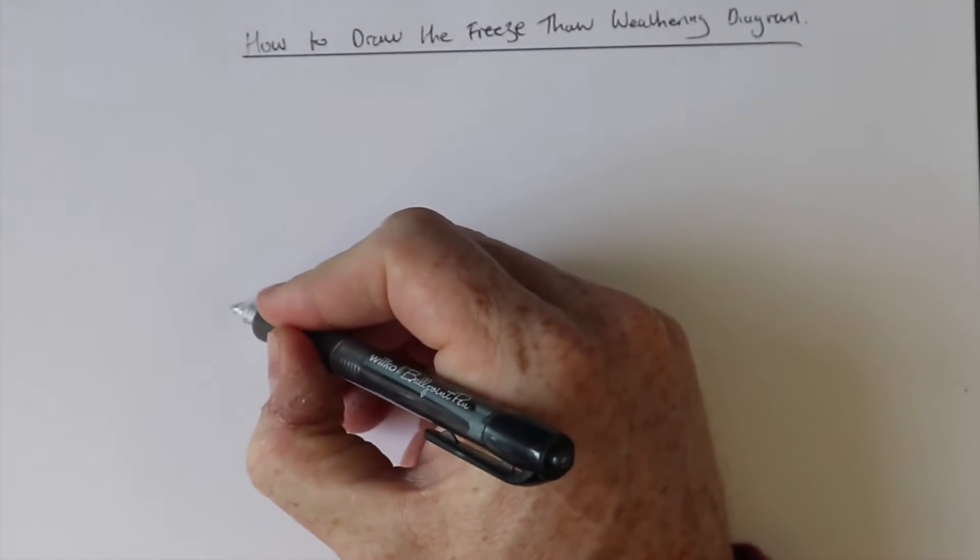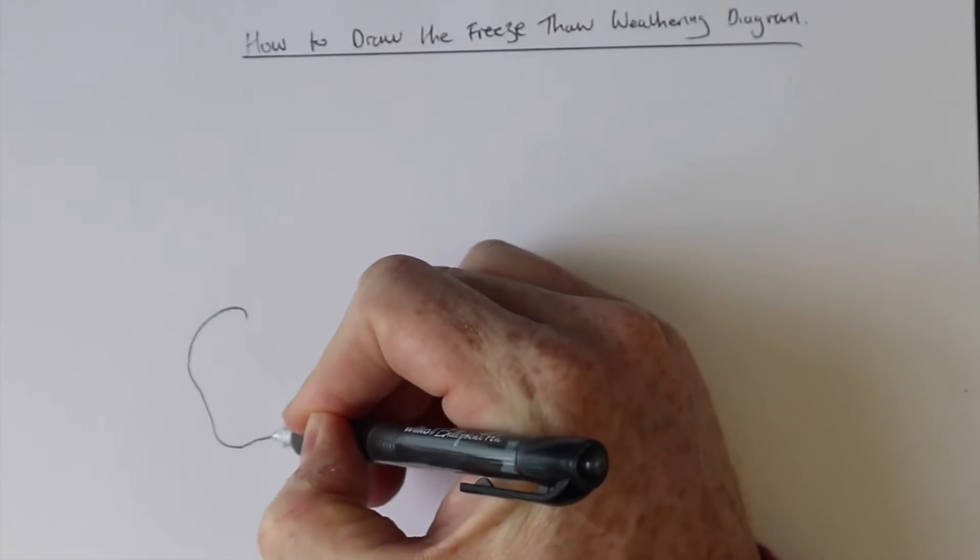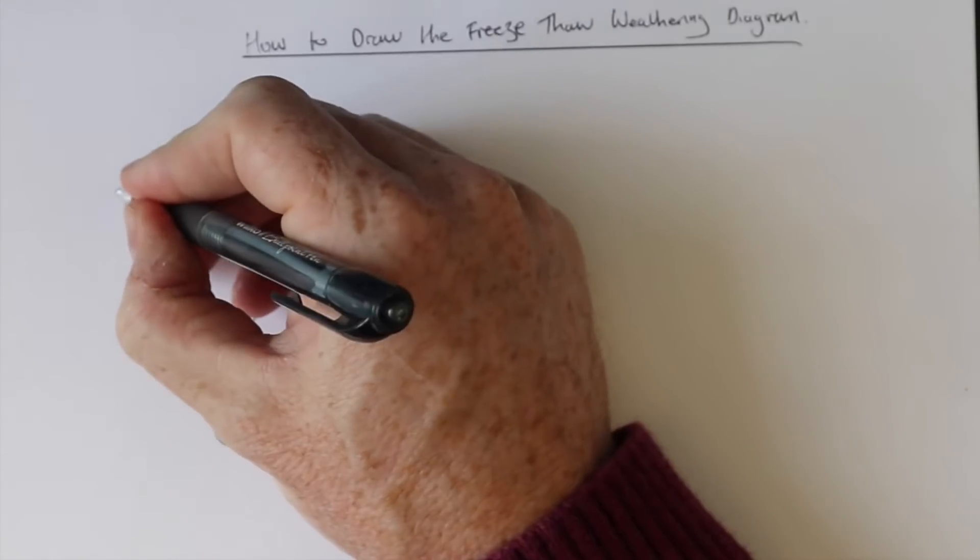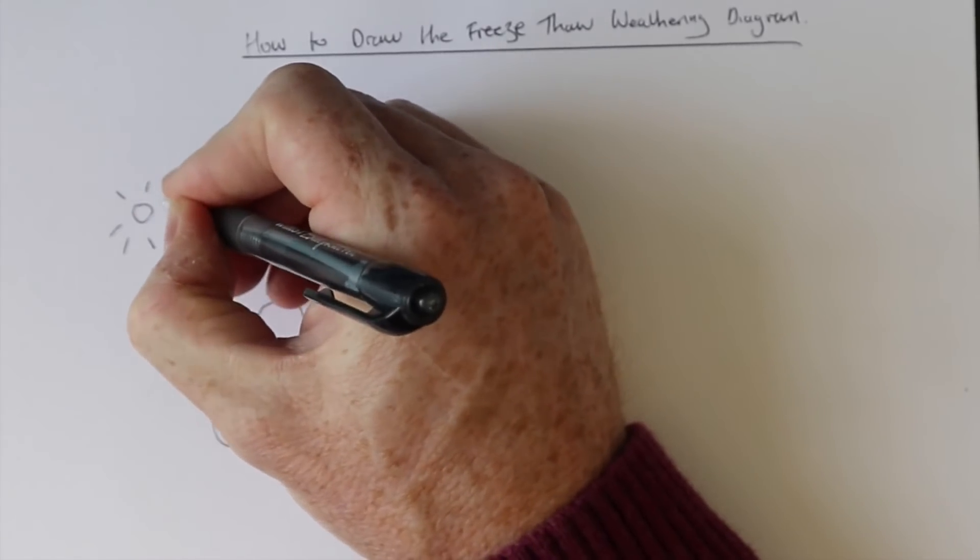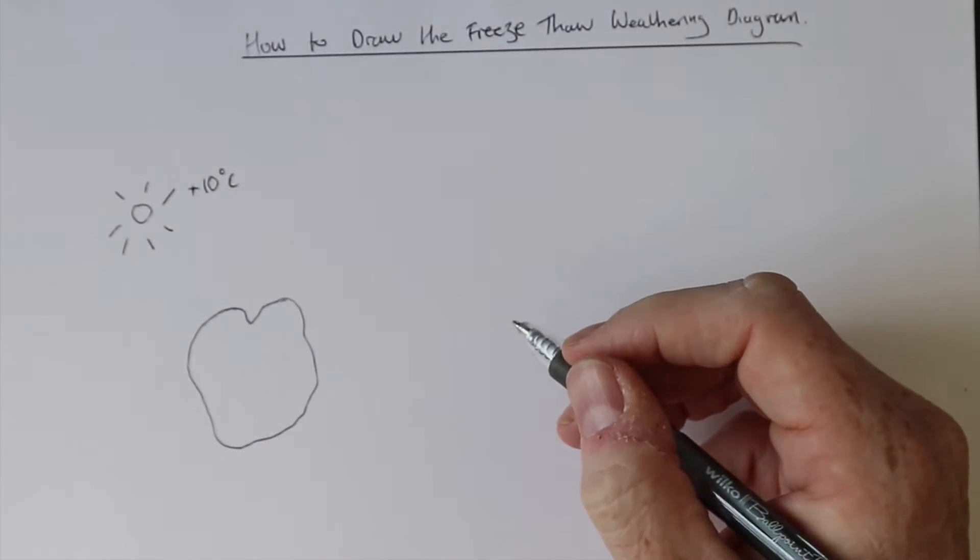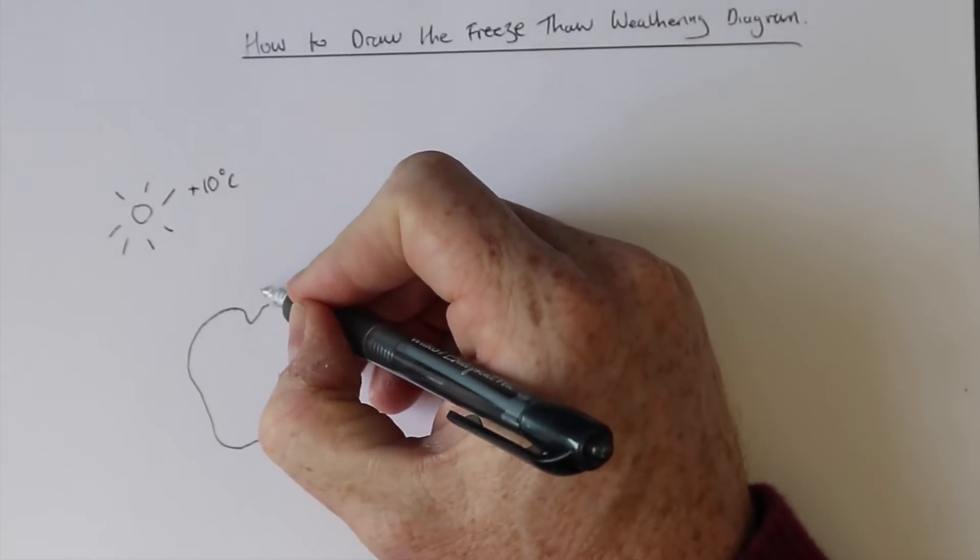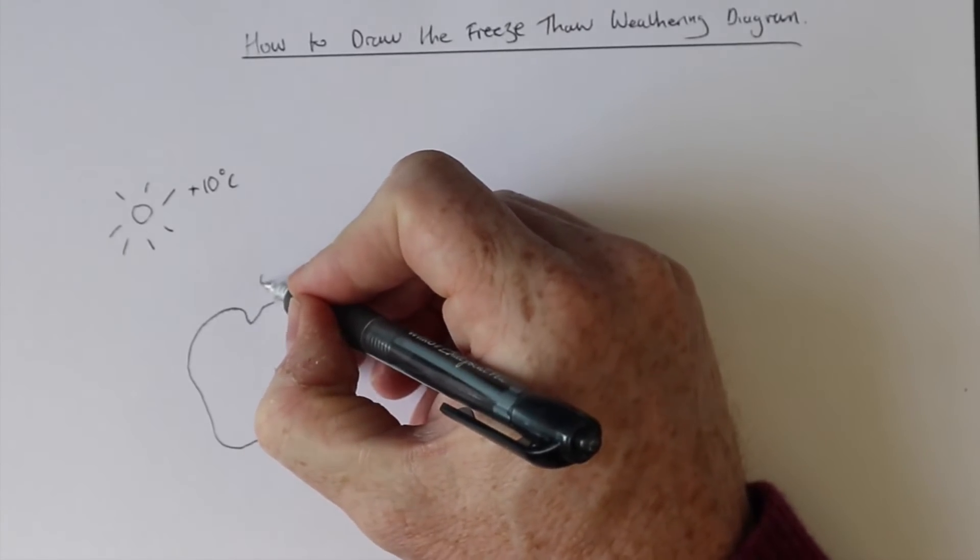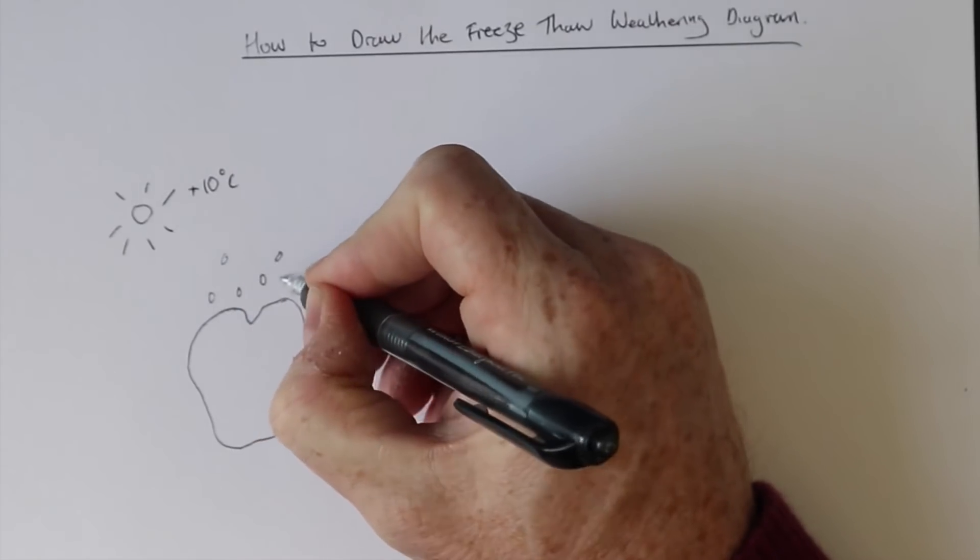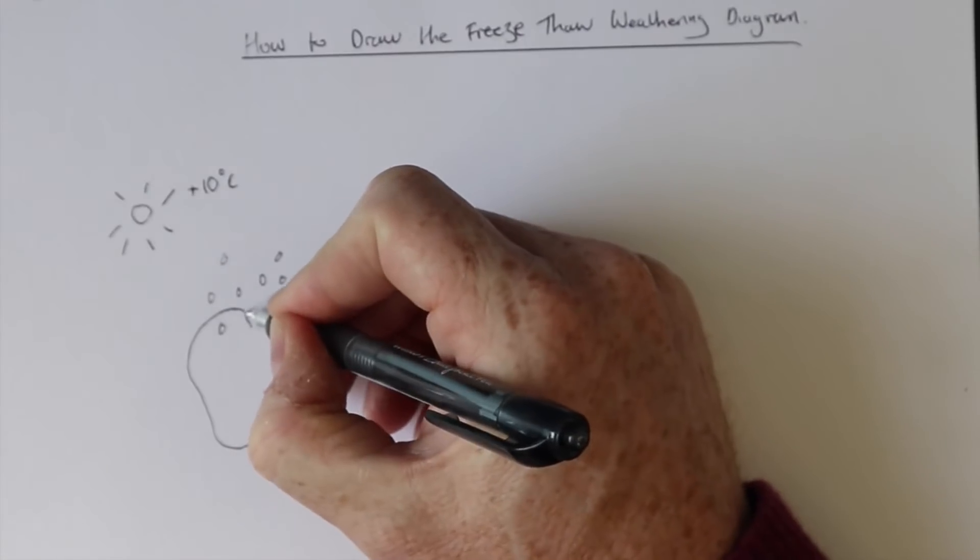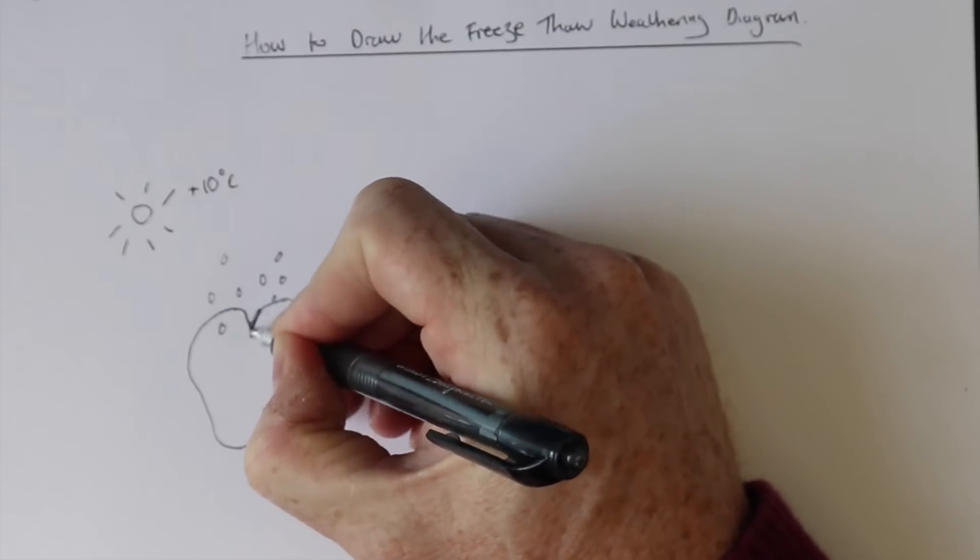First of all, you need the rock, and it's during the day, so we need a little sun. We're going to write plus 10 degrees to indicate that it's above freezing. We're going to have some rain, indicating that water has come into the rock.